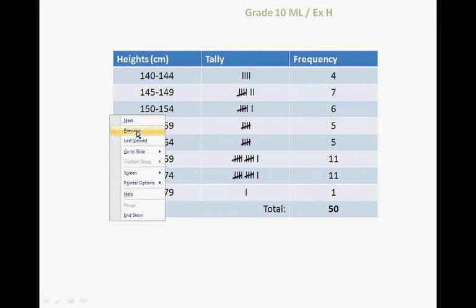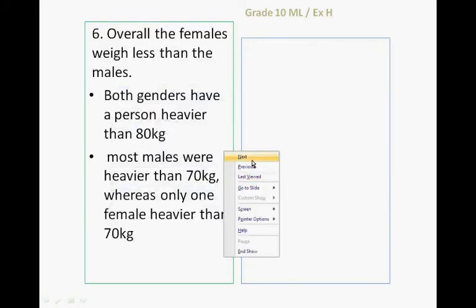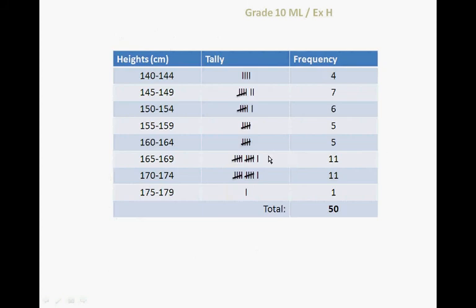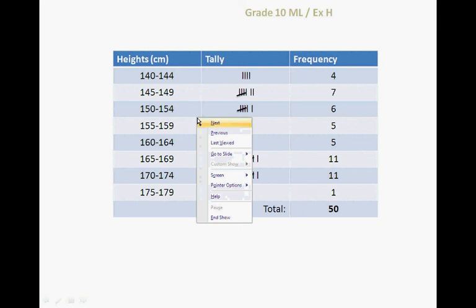What do I notice? I notice that most learners are between 165 and 174 centimeters tall. Because out of the 50 learners, there were a total of 22 learners in those two groups, whereas the rest are really spread evenly between the smaller numbers. And only one is taller than 175. So therefore, I can say most learners are mostly between 165 and 174, which is quite tall.